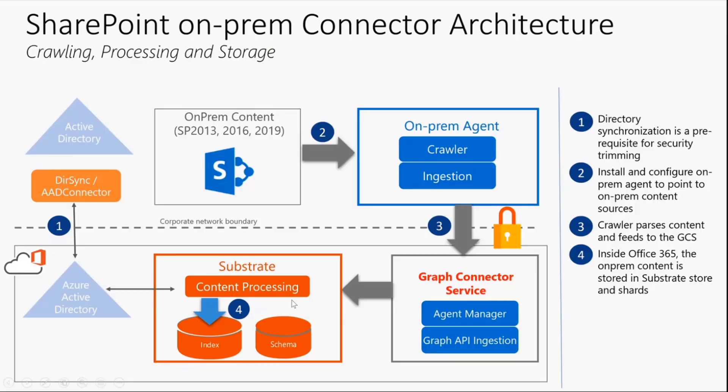At a high level, a bit of information about how the overall architecture works. Here is your source on-prem agent — as mentioned, it's an on-premises agent-based system. The agent is installed locally on your server or VM in your environment, and it contains the information on how to do the crawling for your source system.